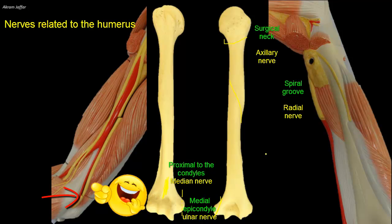This peculiar sensation when struck is commonly referred to as bumping one's funny bone. This name is also thought to be a pun based on the sound resemblance between the name of the humerus and the word humorous, meaning funny.